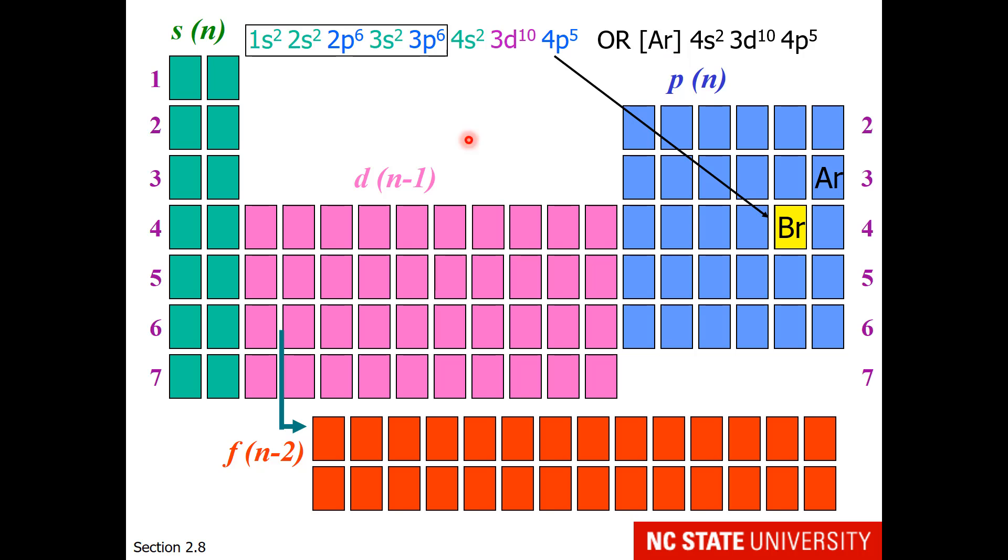So we start with argon and then just do the one row that leads to our element. The only confusing thing about this is that students need to remember that in the d block they should take row number minus 1. So although this is off period 4, this is 3d. This would be 4d, this would be 5d, this would be 6d. And for the f sublevels, these start off row 6. So this would be 4f, and anything in this area would be 5f.